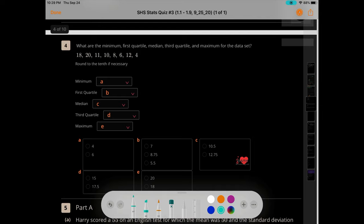Alright, what are the minimum, first quartile, median, third quartile, and maximum for this set? So this is really the five-number summary. That's what they really want us to get.